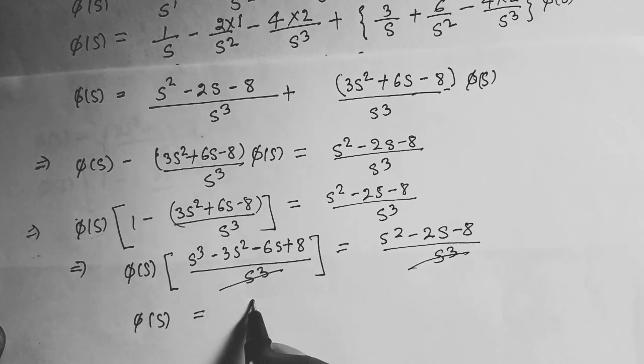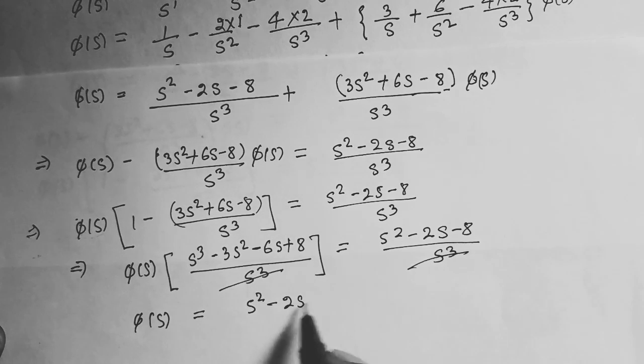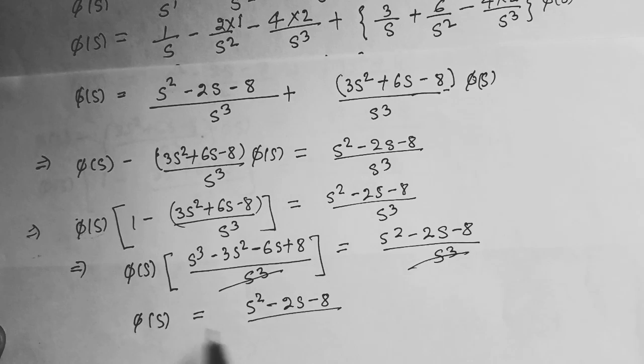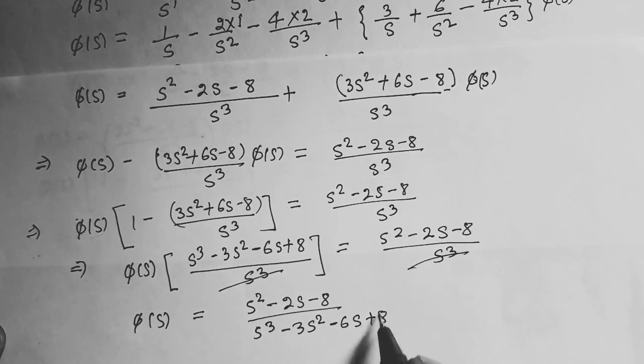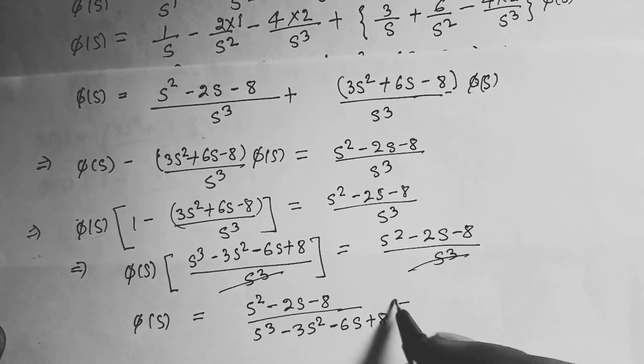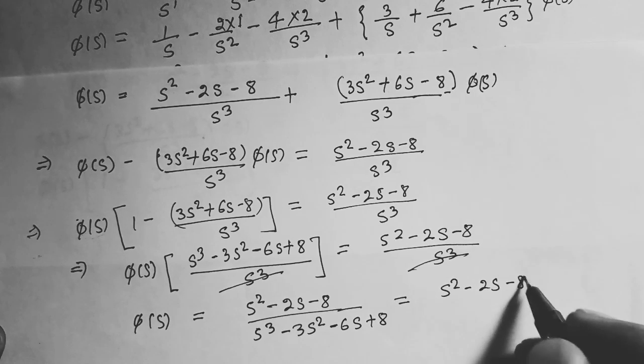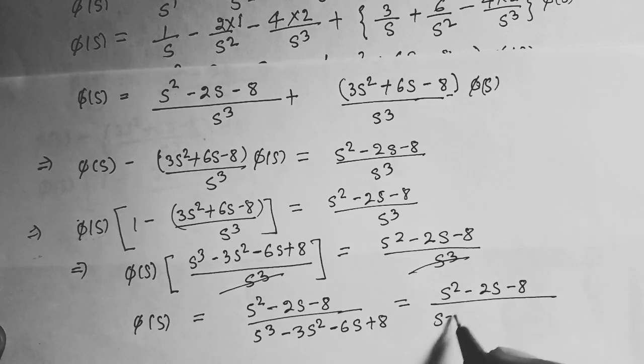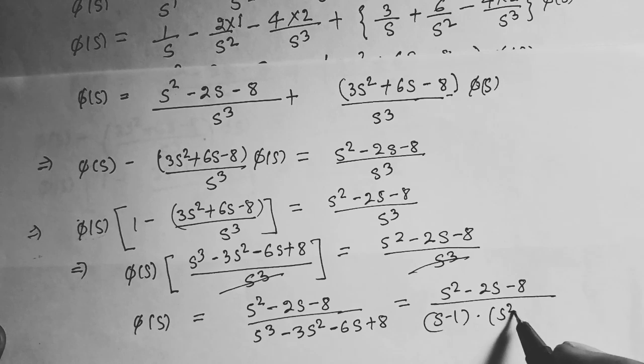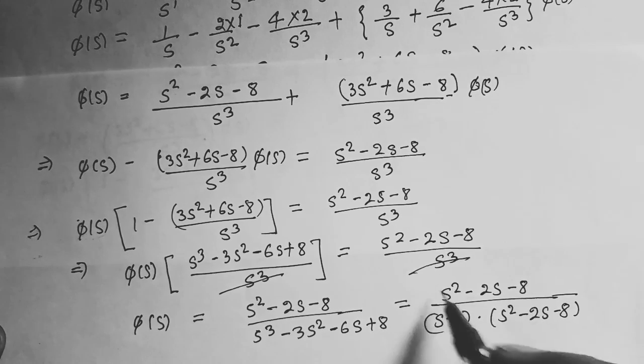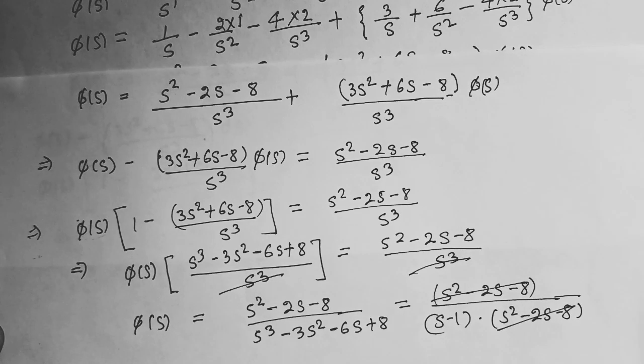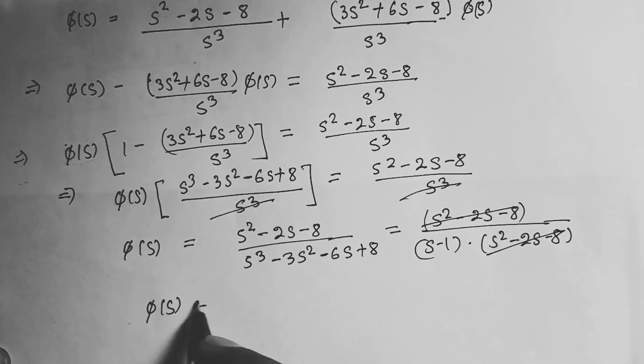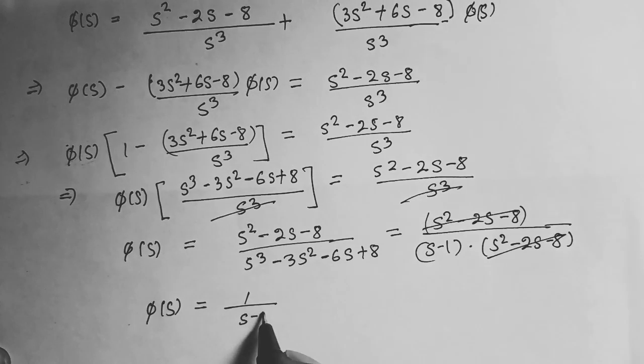Factoring: φ(s) = (s² - 2s - 8)/[(s-1)(s² - 2s - 8)]. The (s² - 2s - 8) terms cancel, giving φ(s) = 1/(s-1).